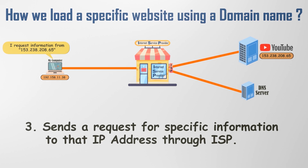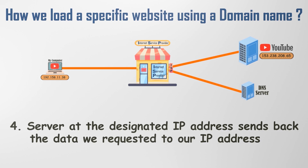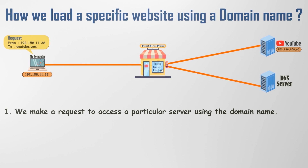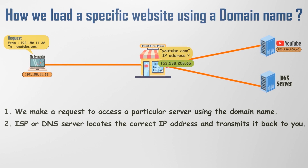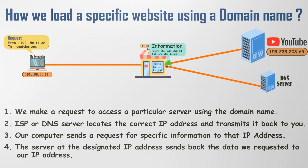Upon receiving our request, the server at the designated IP address sends back the data we requested to our IP address. This is the fundamental mechanism of the Internet: we make a request using a domain name; the ISP or DNS server locates the correct IP address and transmits it back; our computer sends a request to that IP address; and the server sends back the requested data to our IP address.